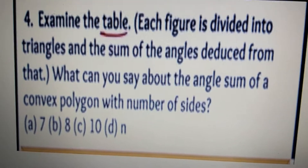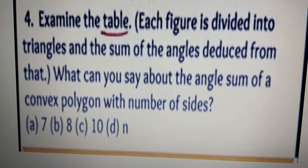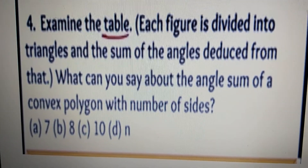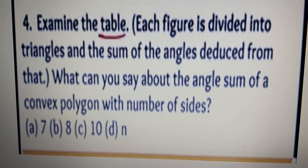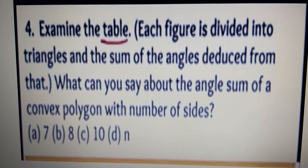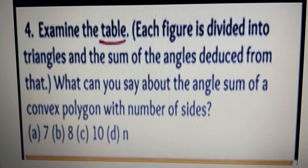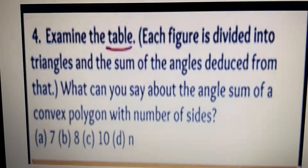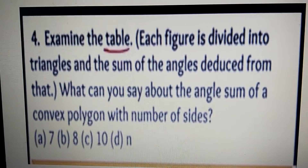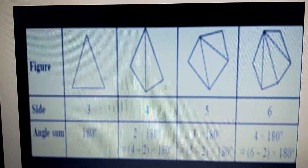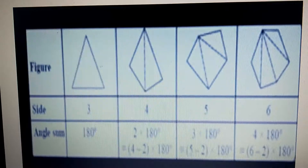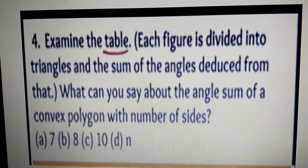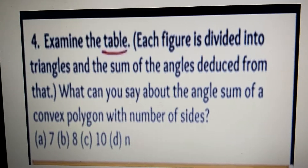Let's see question number 4. Examine the table. Each figure is divided into triangles and the sum of the angles is detected from that. The question asks about the angle sum of a convex polygon with number of sides 7, 8, 10, and N.